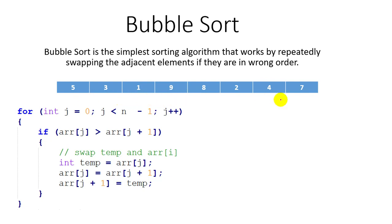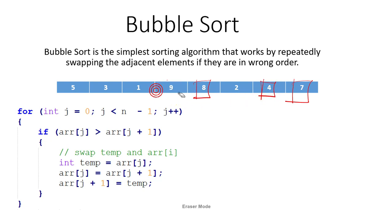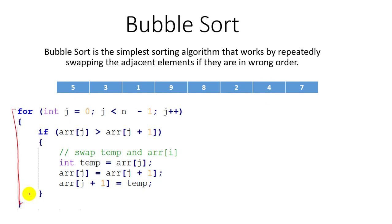Similarly, in this algorithm we will do the swapping of each adjacent element, and the heaviest element will go to the end first. Suppose the heaviest element here is nine — it will go first to the end of this array. Then in the second iteration it will place the next heaviest element. Let me explain how it actually works using this for loop.